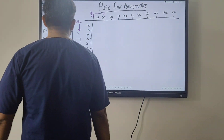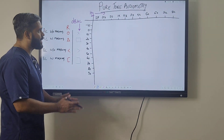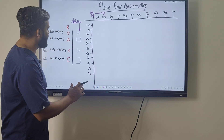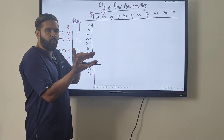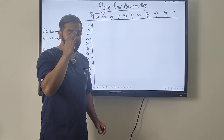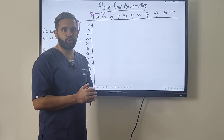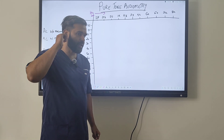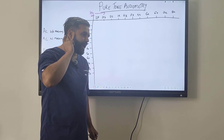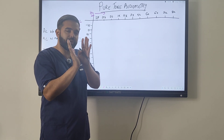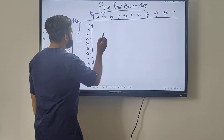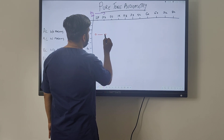How is pure tone audiometry plotted? Let's take normal hearing for the right ear. In normal hearing, air conduction and bone conduction are both performing normally. Air conduction is better than bone conduction, but the air bone gap will not be more than 15 to 20 decibels. This means the air conductive pathway through the ear canal, eardrum, and ossicular pathway has a gap of less than 20 decibels compared to the bone conduction pathway.